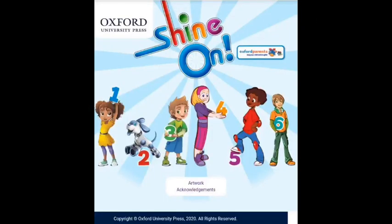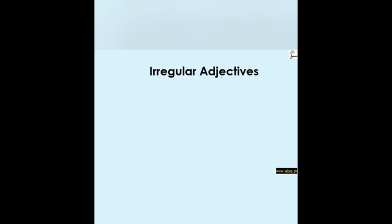Hello, my sweeties! Today we have a new grammar lesson about irregular adjectives. As we know, adjectives are divided into two parts: irregular adjectives and regular adjectives. Today we have the lesson on irregular adjectives. Irregular means that they don't have any rule.